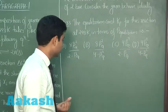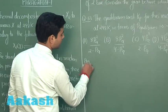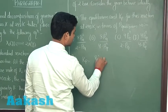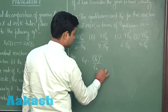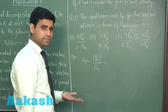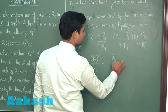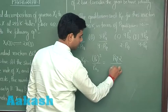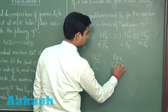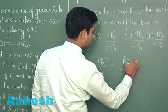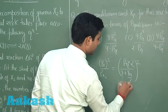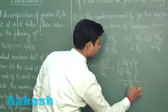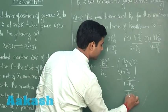To find Kp, we use Kp = (partial pressure of X)² / (partial pressure of X₂). The partial pressure of X equals beta_eq × 2 divided by (1 + beta_eq/2), and the partial pressure of X₂ equals (1 − beta_eq/2) × 2 divided by (1 + beta_eq/2).